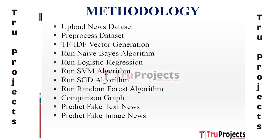The eleventh module is Predict Fake Image News. To analyze image news articles, a visual content analysis algorithm is used. This algorithm examines the visual content of the images associated with the news articles. As fake news images are often duplicates of old original images, the visual content analysis helps identify whether the image used in the news is genuine or fake.